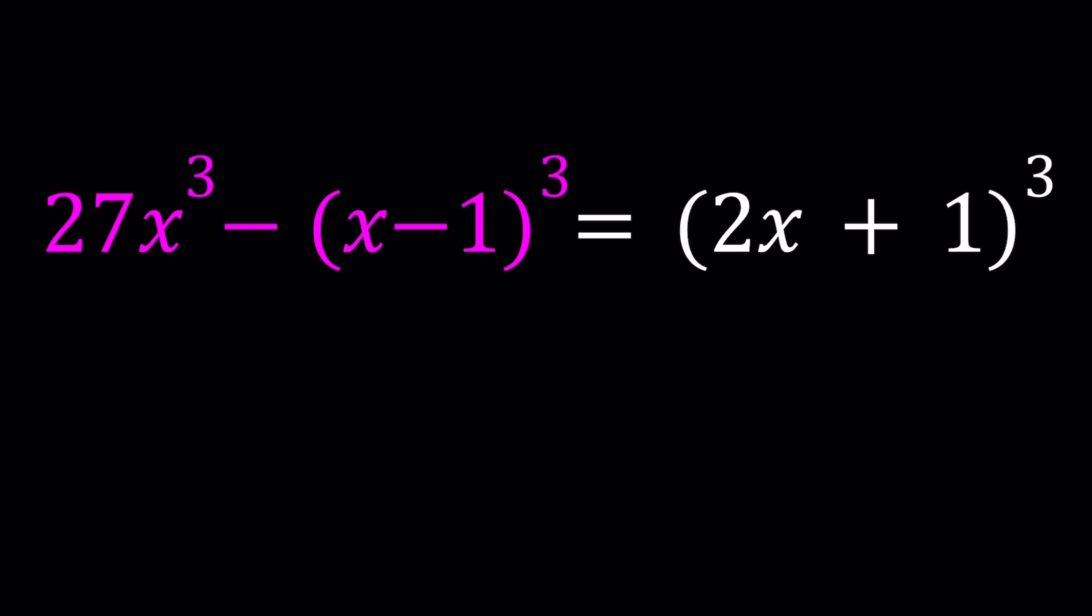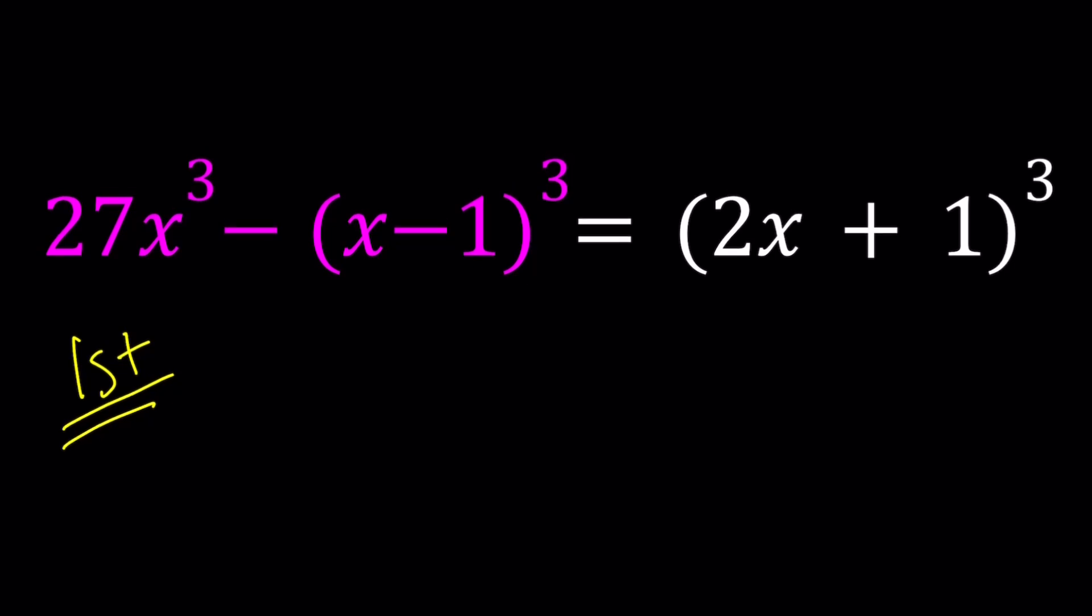Alright, let's start with the first one. So the first method is basically just expanding everything. So let's go ahead and expand (x minus 1) quantity cubed. That's going to give us x cubed minus 3x squared plus 3x minus 1.